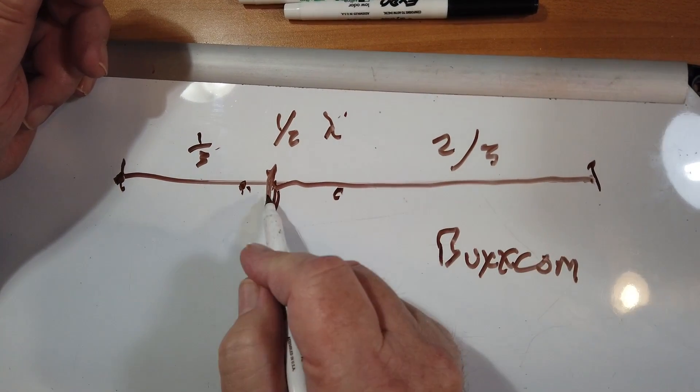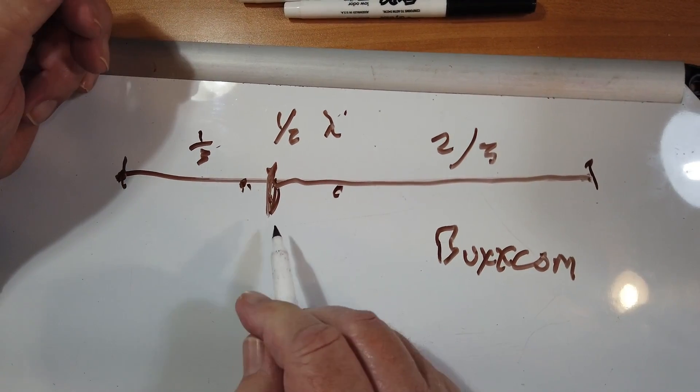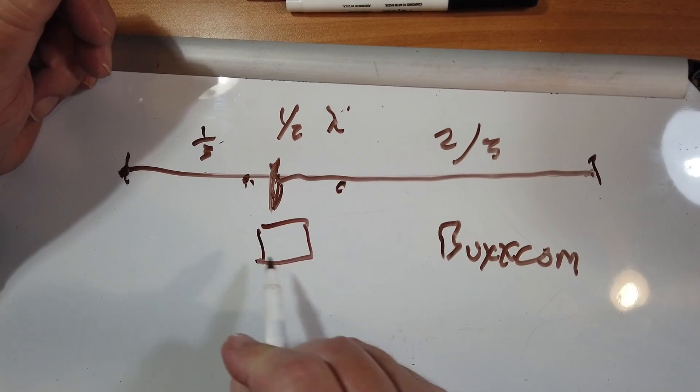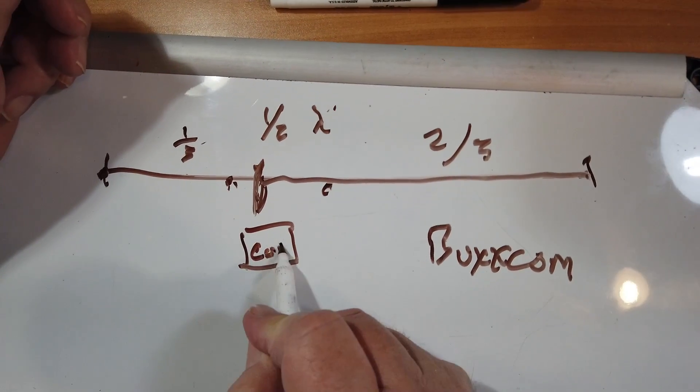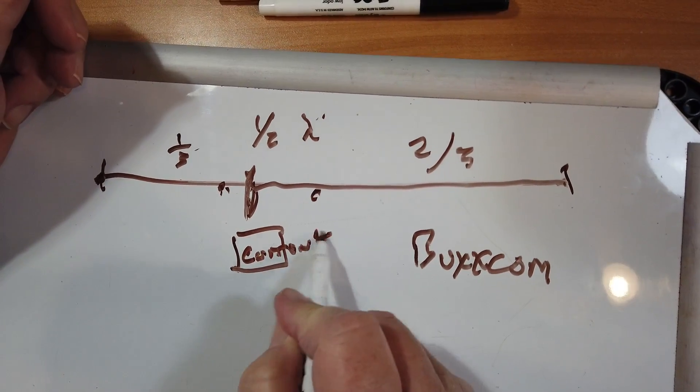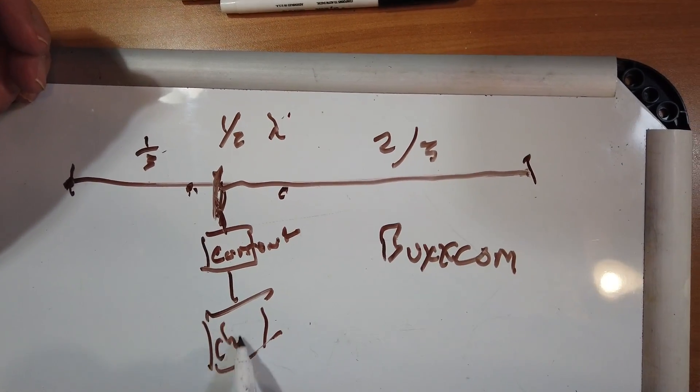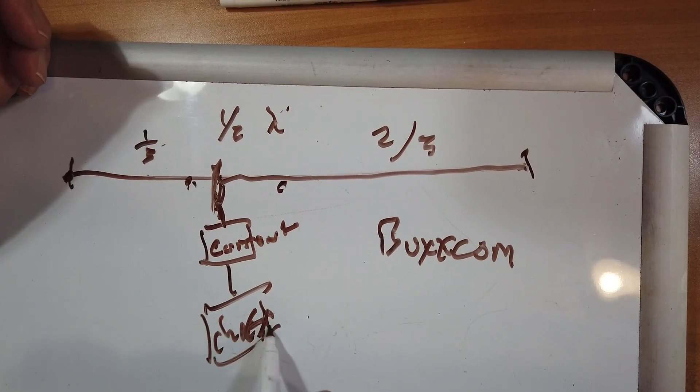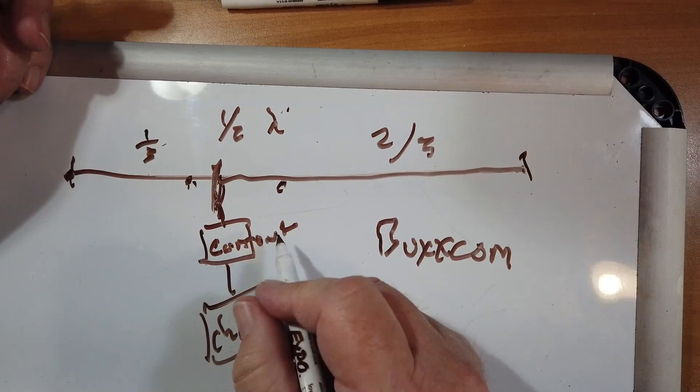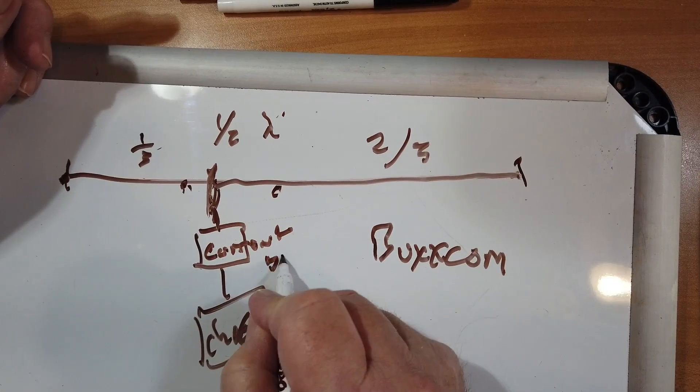And it is fed with two baluns. The first is a current balun. That's the one that it sees right here. And then this goes out to a choke balun. Because this balun right here, this current balun, is really a bal-bal.